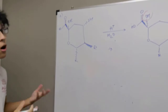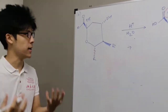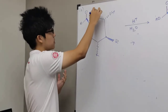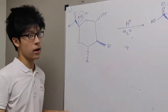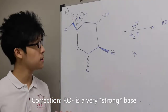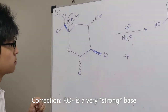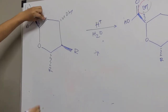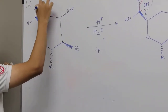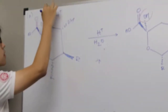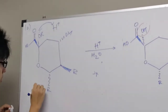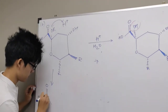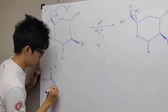Now let's draw out our mechanism. What we notice is that this OR group is actually a poor leaving group. Why? Because OR⁻ is actually a very poor base. So we need to make it into a better leaving group. How do we do that? We do that by protonating it with an acid like H⁺, and this will produce a good leaving group that actually wants to leave.